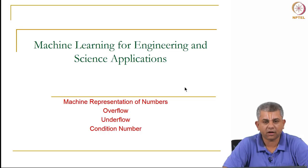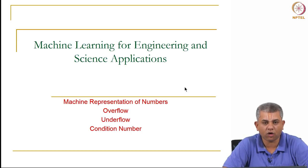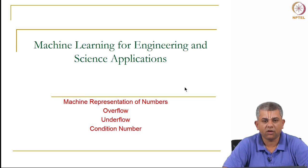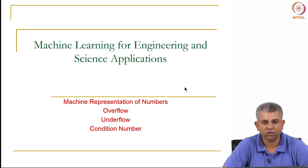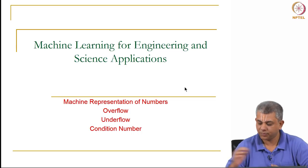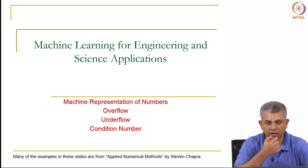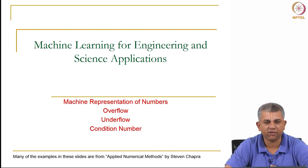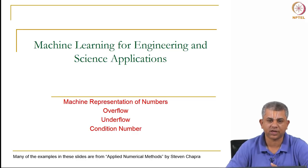In this video we will be looking at how your computer represents numbers, and a few phenomena which can go wrong when we think that the way the computer processes numbers is the way we do things on paper intuitively. This idea is something called overflow and underflow; we will also look at another idea called condition number. Most of the examples are from an introductory book on numerical methods by Stephen Chapra.